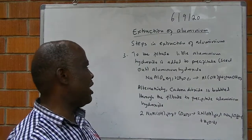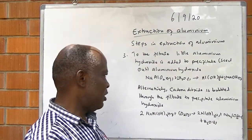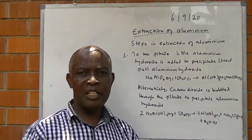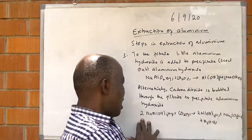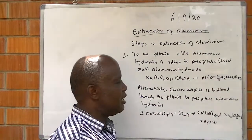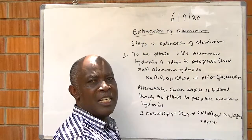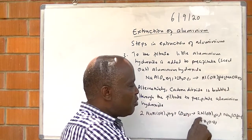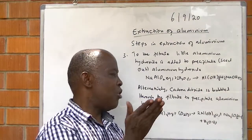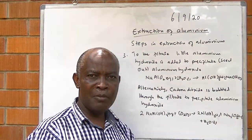Finally, to the filtrate, a little Aluminium Oxide is added to precipitate, or seed out, Aluminium Hydroxide. Alternatively, carbon dioxide is bubbled through the filtrate to precipitate Aluminium Hydroxide. Aluminate plus carbon dioxide gives Aluminium Hydroxide, which is a solid, plus sodium carbonate, which is soluble, and water. Sodium silicate remains in solution. When we filter out Aluminium Hydroxide, we are able to separate it from the impurity, which was sodium silicate.